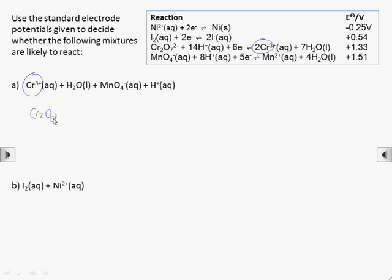In the first part we've got Cr3 plus ions, so we can find the half equation that includes Cr3 plus ions and copy that one down. We can see that the same half equation also provides the water.